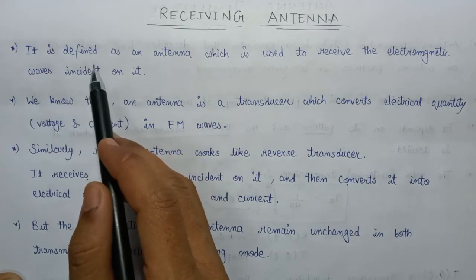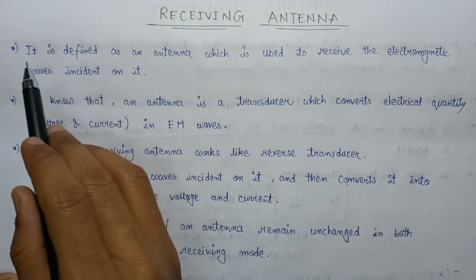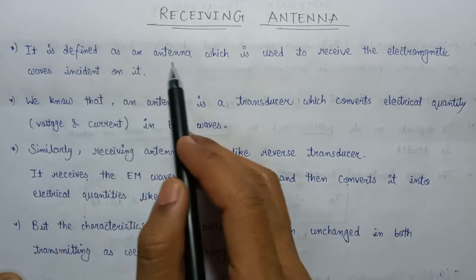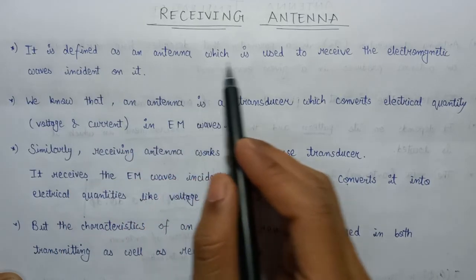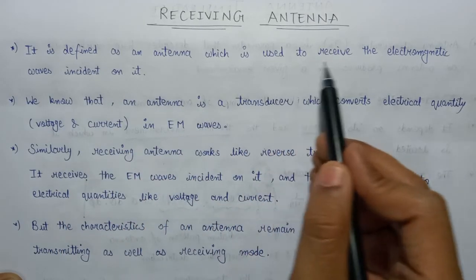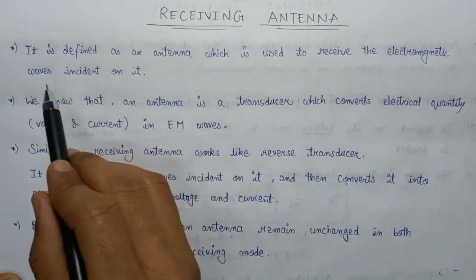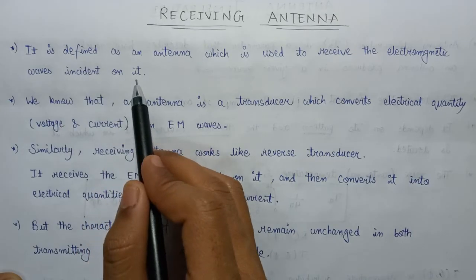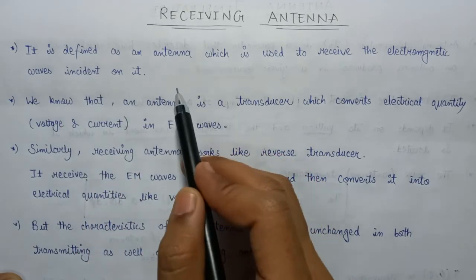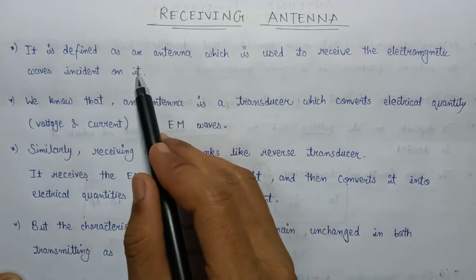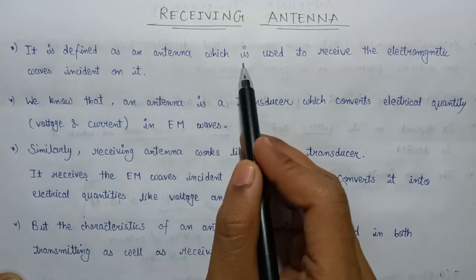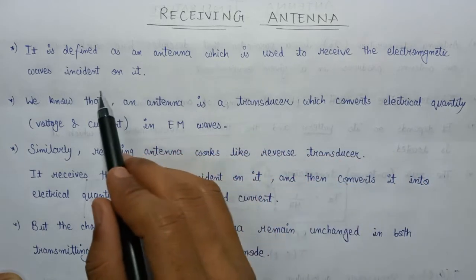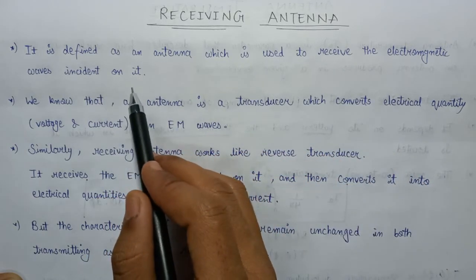The receiving antenna is defined as an antenna which is used to receive the electromagnetic wave that is incident on it. Its major functionality is to receive the electromagnetic wave incident on it.